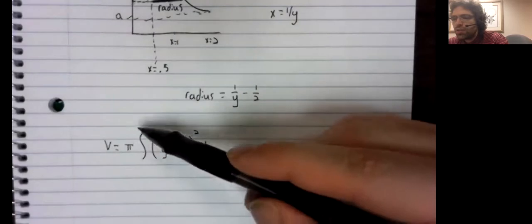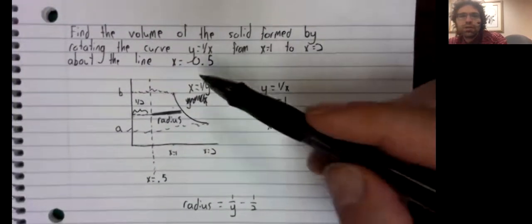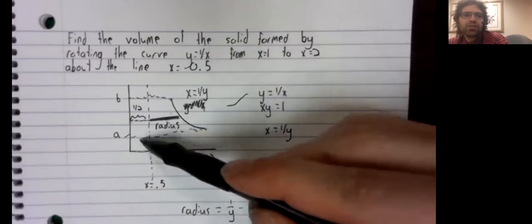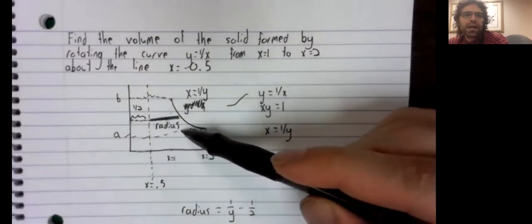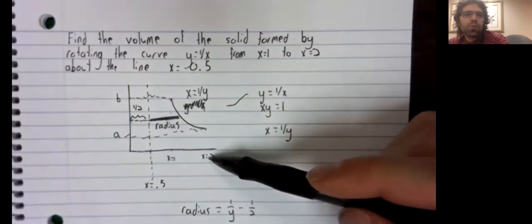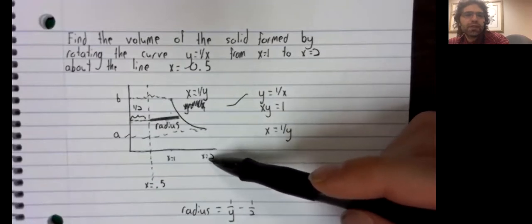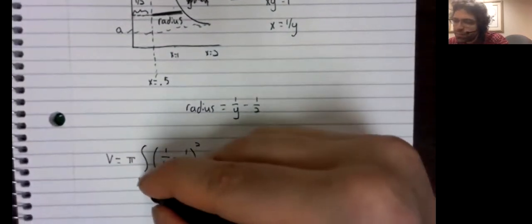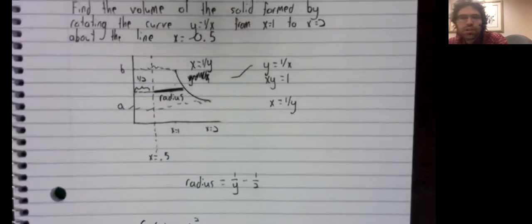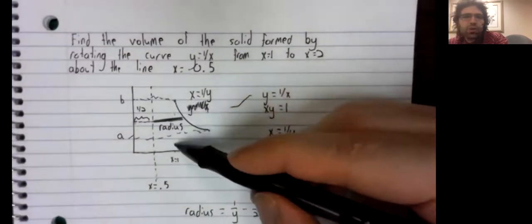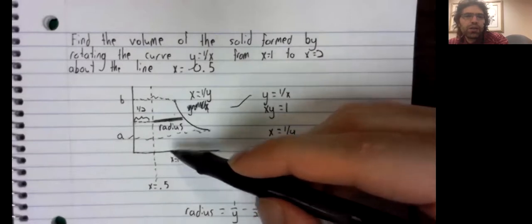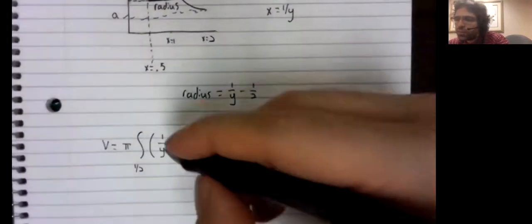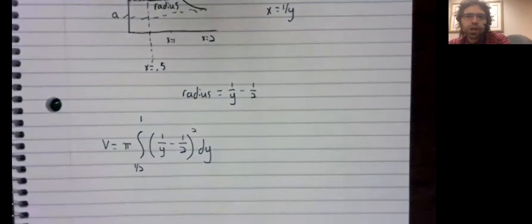From what to what? Well, y equals one divided by x. This lower bound happens at x equals two. When x equals two, y is one half. And this upper bound occurs at x equals one. When x equals one, y equals one. So there's our integral.